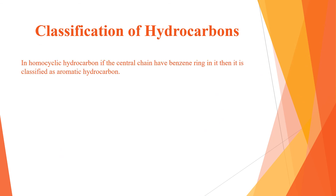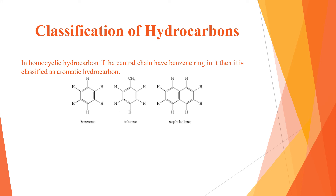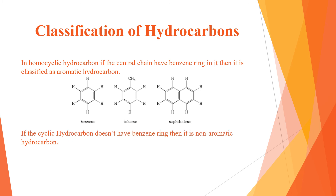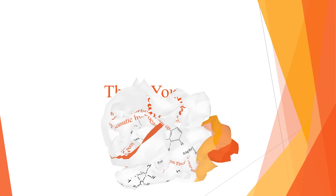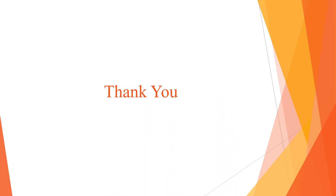In homocyclic hydrocarbons, if the central ring contains a benzene ring, it is classified as an aromatic hydrocarbon. A benzene ring is a molecule of six carbon and six hydrogen atoms with alternating three double and single bonds. Toluene and naphthalene are examples of aromatic hydrocarbons. If the cyclic hydrocarbon does not have a benzene ring, it is a non-aromatic hydrocarbon — simple cyclic hydrocarbons are non-aromatic. That's it for the presentation, thank you.